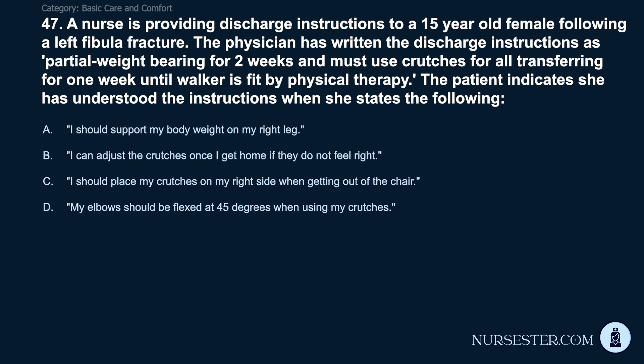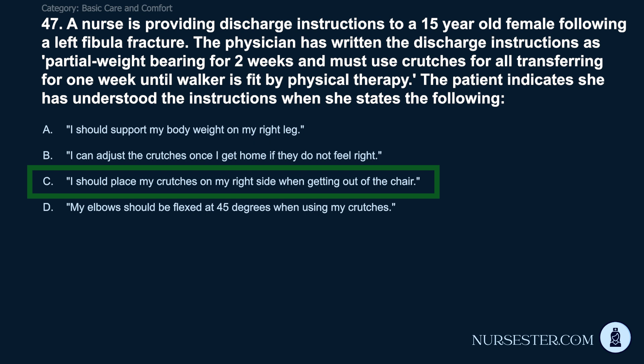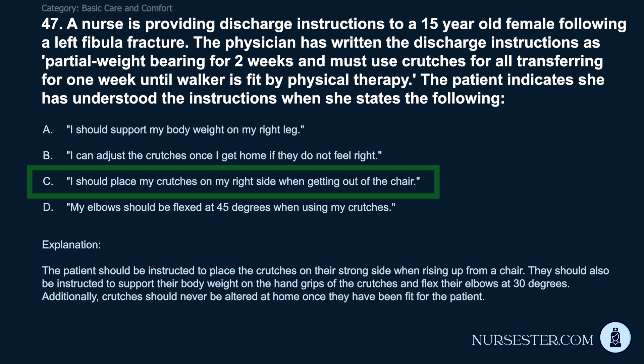Question 47: A nurse is providing discharge instructions to a 15-year-old female with a left fibula fracture. Physician instructions include partial weight bearing for two weeks and crutches for all transferring for one week until a walker is fitted by physical therapy. The patient indicates understanding when she states: A) I should support my body weight on my right leg. B) I can adjust the crutches once I get home. C) I should place my crutches on my right side when getting out of the chair. D) My elbows should be flexed at 45 degrees. Correct answer: C. Crutches should be placed on the strong side when rising from a chair. The patient should support weight on hand grips, flex elbows at 30 degrees, and never alter crutches at home.